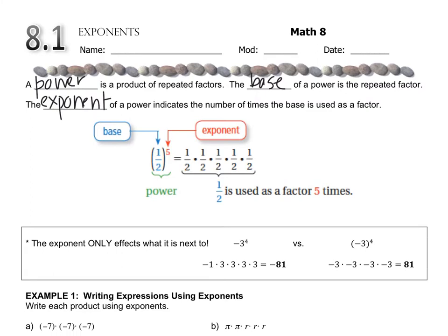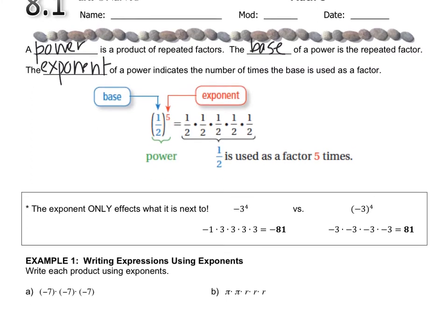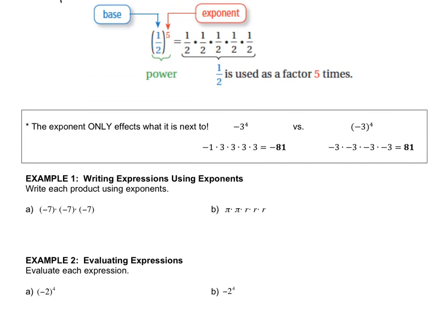One thing that might take a while for your brain to absorb is that the exponent only affects what it's next to, so you can't pick and choose what you want the exponent to stand for because of the order of operations you learned in 4th grade.